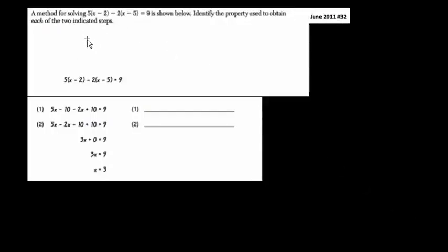Okay, so we're told here that a method for solving, and I'll write this out in case you can't see it, 5 times x minus 2 minus 2 times x minus 5. So we're saying these are the steps that someone used to solve it. Identify the property that we're using in each of the steps.